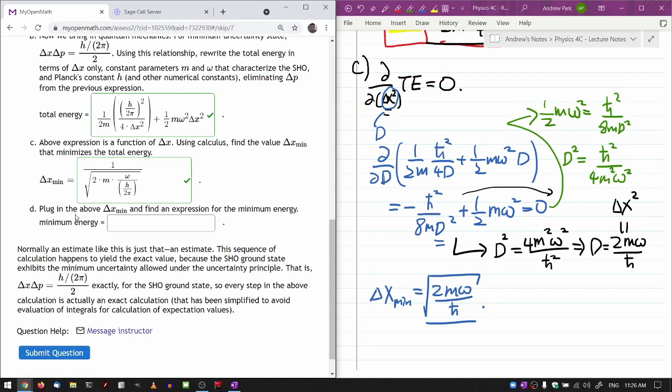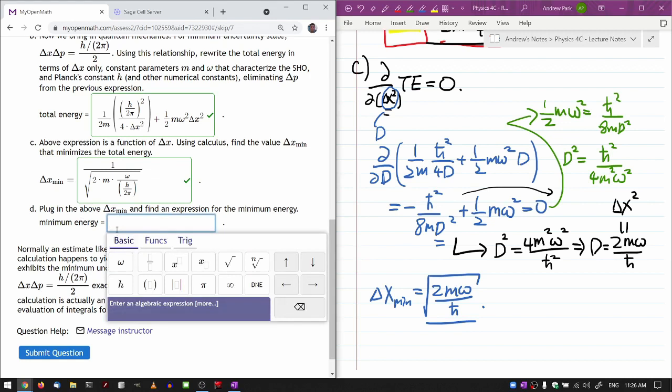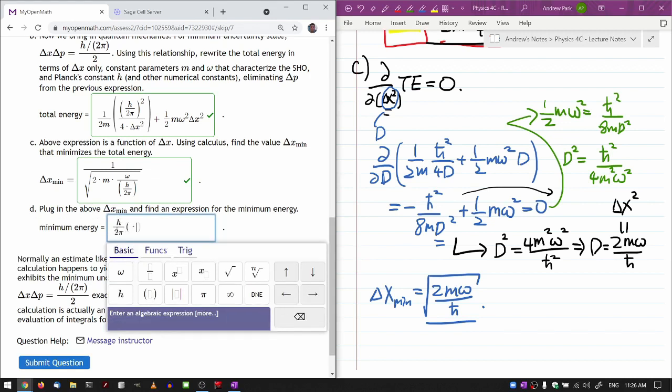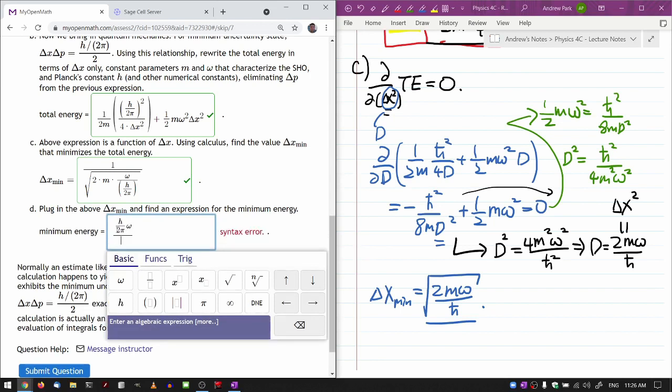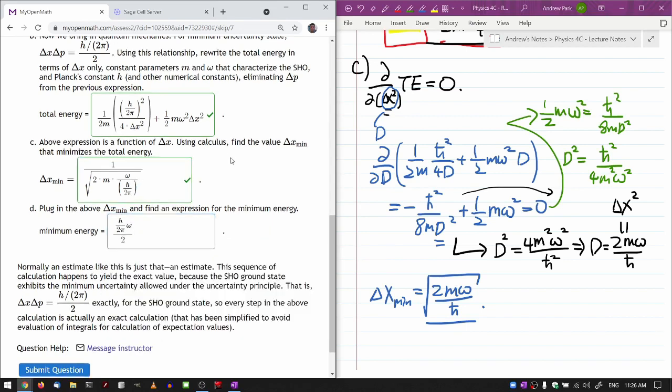So for part D, I know what the answer is. So I'm just gonna write in the answer. Here the answer will end up being h bar or h over 2 pi times omega. And not ending there, it's omega divided by 2 because it's the ground state. And when you plug in the value of delta x min into these, and you go through the algebra, this is what you will get.